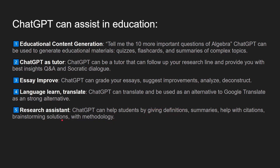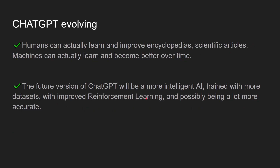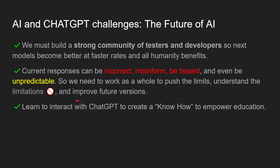ChatGPT is evolving. Humans can learn and improve encyclopedias and scientific articles, and machines can learn from new human-generated data through reinforcement learning to get better over time. Future versions of ChatGPT will be more intelligent, trained on more datasets with improved reinforcement learning, and will likely be much more accurate.